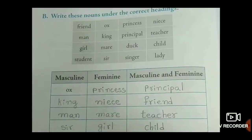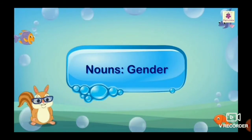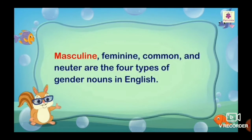Moving on to the next page. Next one: gender nouns. Write these nouns under the correct headings. Here some words are given in the box. Under the masculine, write only male naming words. Under the feminine, write only female naming words. Before that, let's have a look at noun genders. Masculine, feminine, common, and neuter are the four types of gender nouns in English.